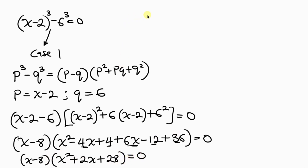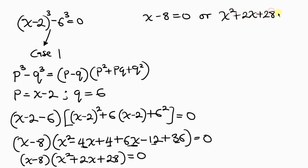There are two cases. We have x minus 8 equal to 0, or x squared plus 2x plus 28 equal to 0. From the first case, moving negative 8 to the right gives the real value x equal to 8.